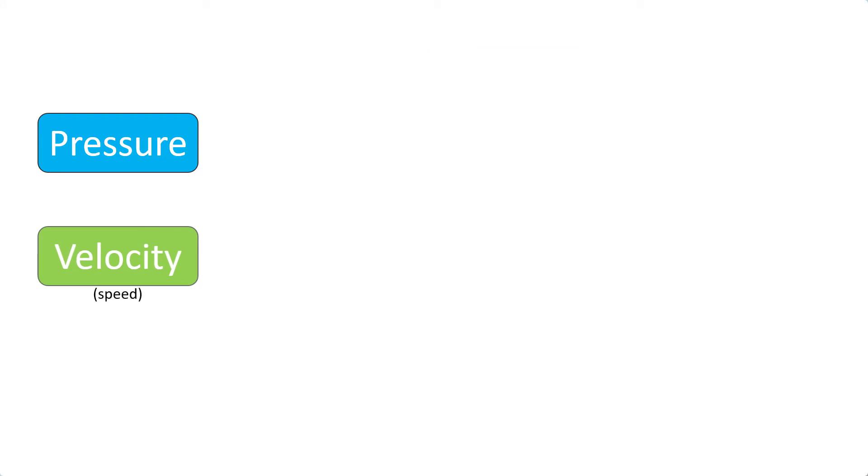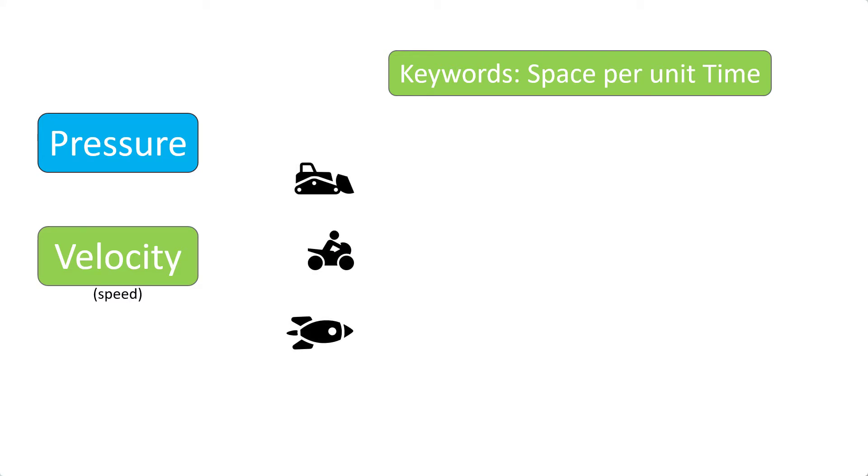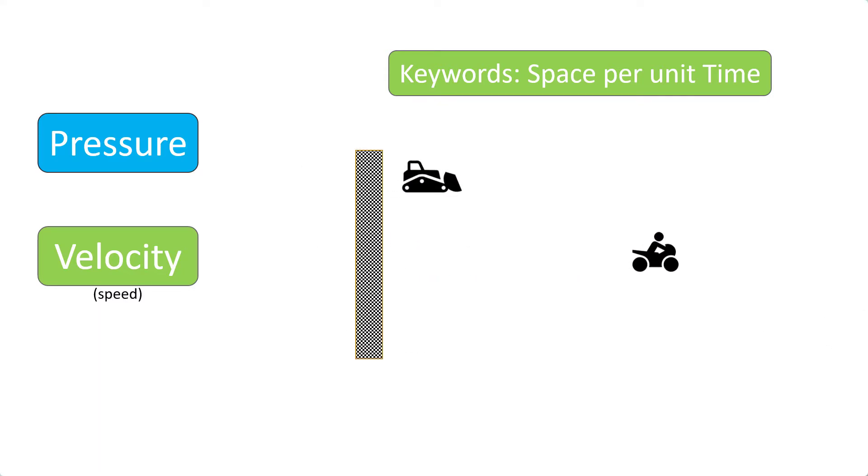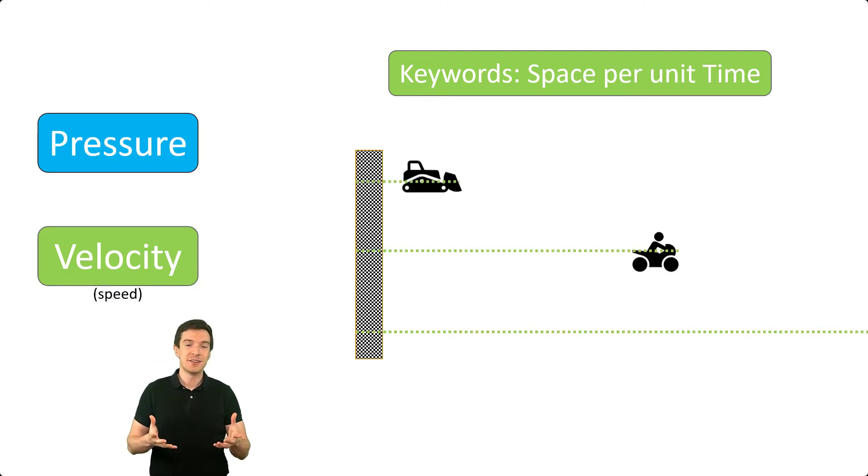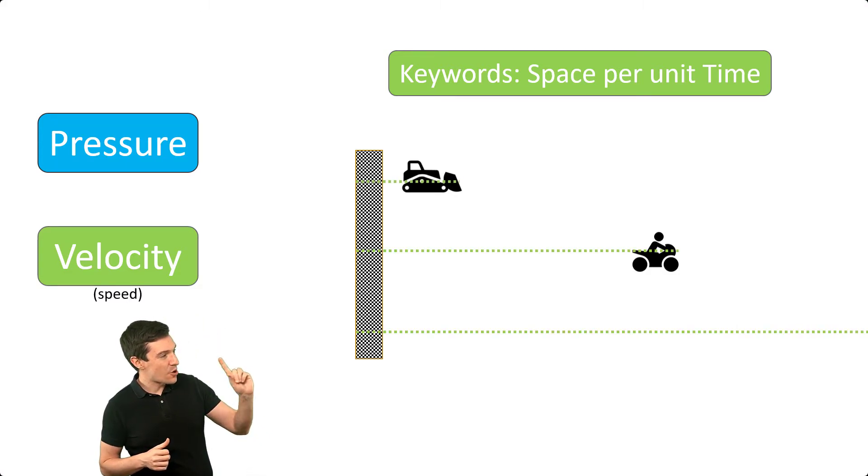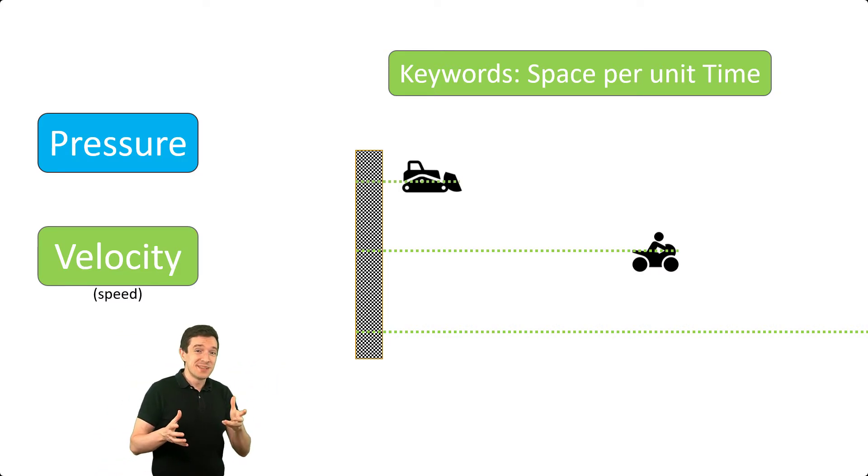Next, we can introduce the velocity or speed. This, as you may know, is the measure of how much space something covers per unit of time. If we have a race between a bulldozer, a motorcycle, and a rocket, we can see that they cover different distances in the same amount of time. The rocket, well, it's already down the street there. This means that they go at different velocities. The slowest is the bulldozer and the rocket is the fastest.